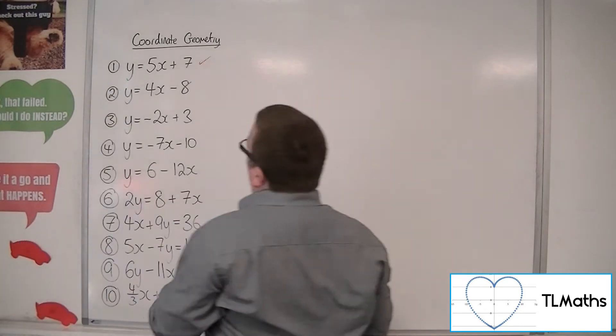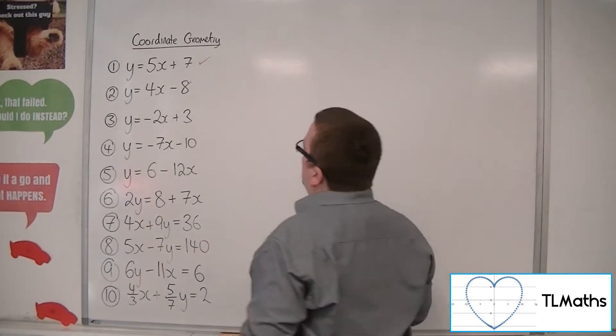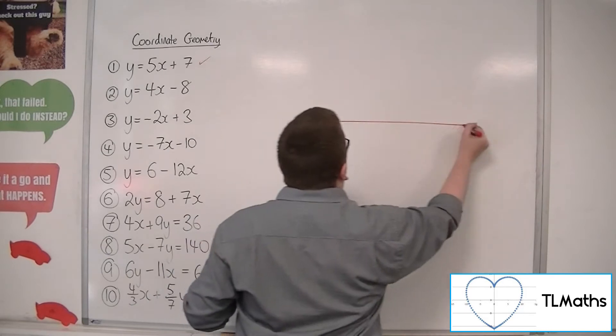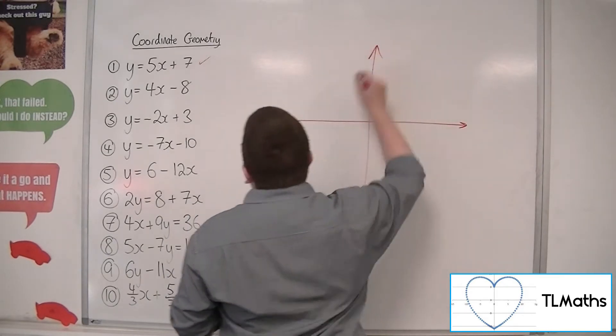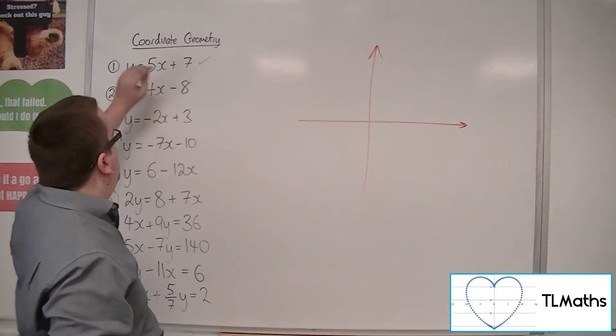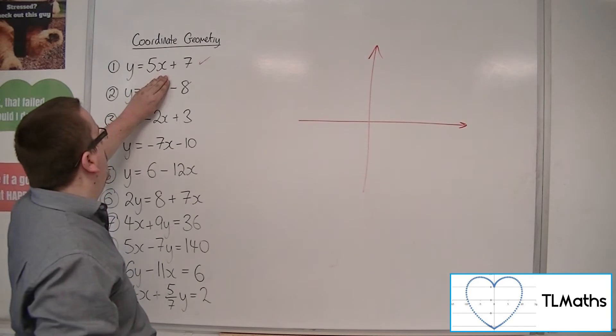Okay, then number 2, y is equal to 4x minus 8. So if we go straight in, okay, then we can say that when x is 0, where it crosses the y-axis will be at minus 8.